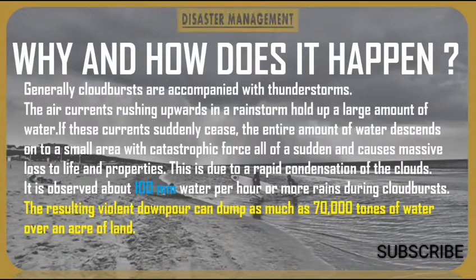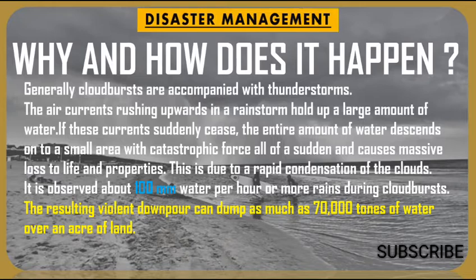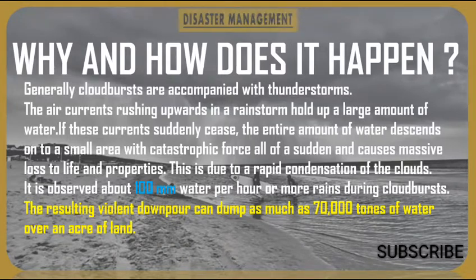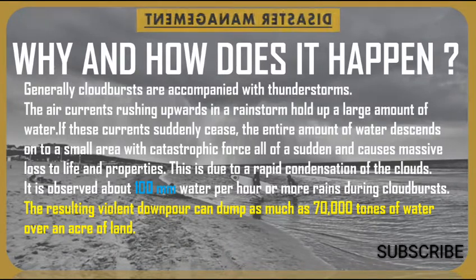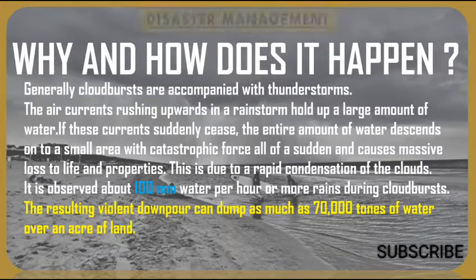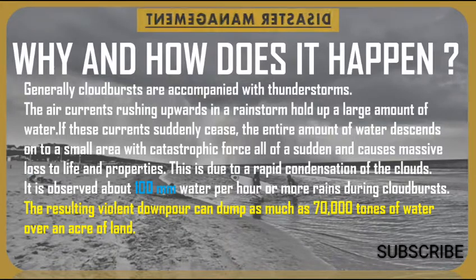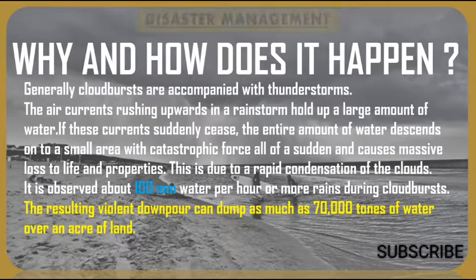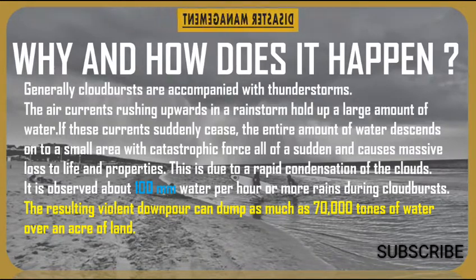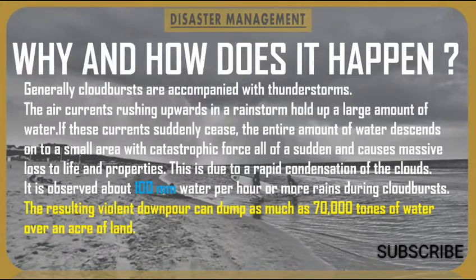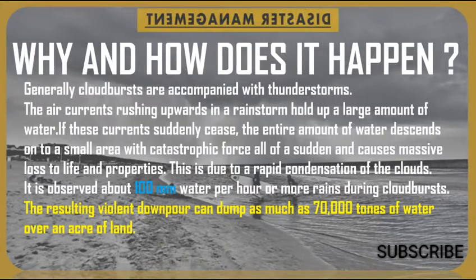Generally, cloudbursts are accompanied by thunderstorms. The air currents rushing upwards in a rainstorm hold up a large amount of water. If this current suddenly ceases, the entire amount of water descends on a small area with catastrophic force all of a sudden, causing massive destruction.